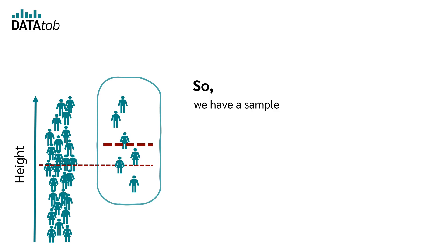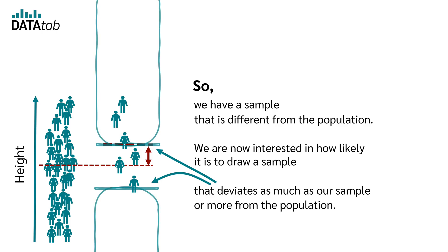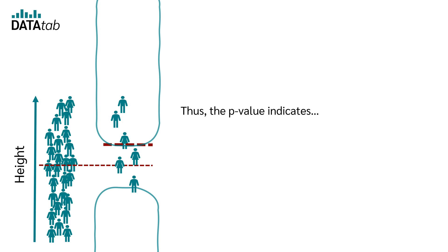Let's take a closer look again. So we have a sample that is different from the population. We are now interested in how likely it is to draw a sample that deviates as much as our sample or more from the population. Thus, the p-value indicates how likely it is to draw a sample whose mean is in this range.